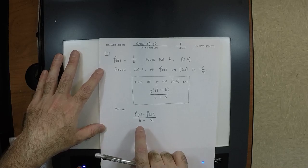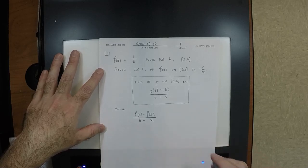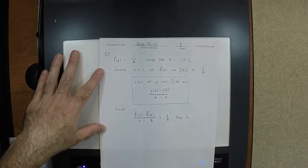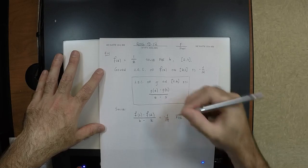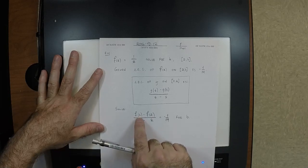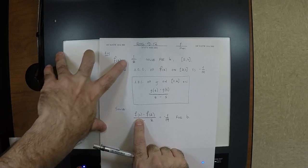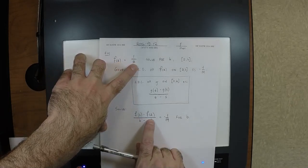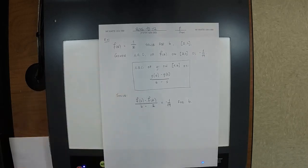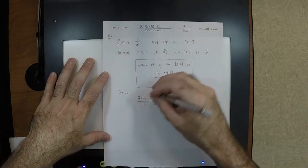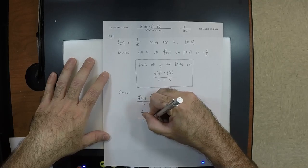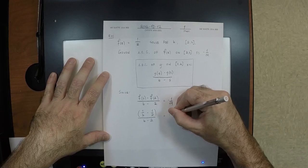You have to solve: [f(b) − f(2)] / (b − 2) = −1/14. That's the average rate of change on the unknown interval. f(b) = 1/b and f(2) = 1/2, so the equation becomes: (1/b − 1/2) / (b − 2) = −1/14. This is now just an equation you must solve.